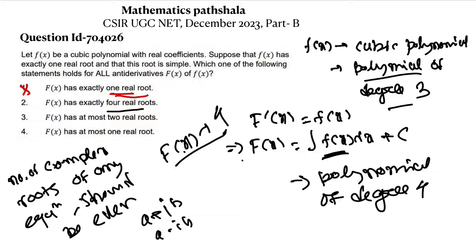In Option 3, it says F(x) has at most one real root. But from our example, F(x) has two real roots, so Option 3 is also false. In Option 4, it says F(x) has at most two real roots. Since this is a Part B question and one option must be true, and Options 1, 2, and 3 are false, Option 4 should be true. Now let's discuss Option 4 in a geometrical way.